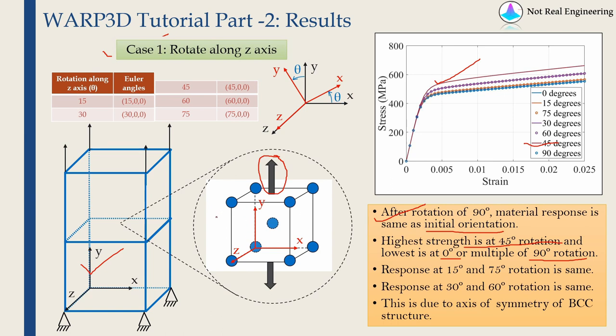Therefore, highest strength is at 45 degree rotation. And lowest is at 0 or any rotation which is multiple of 90 degrees. Because after every 90 degree rotation, we are going to get the same structure. So if you see just the front face, if you rotate this by 30 degrees, the front face will be something like this. And still we are applying load in this direction. Therefore, its response is changing.